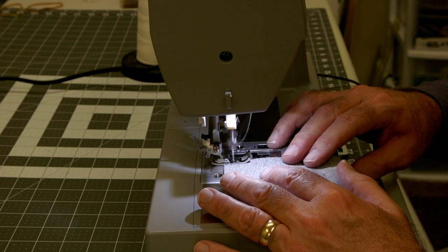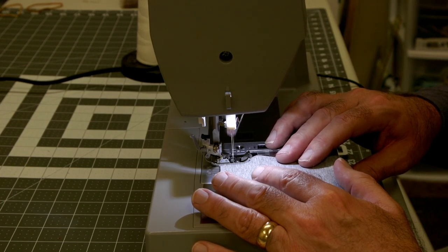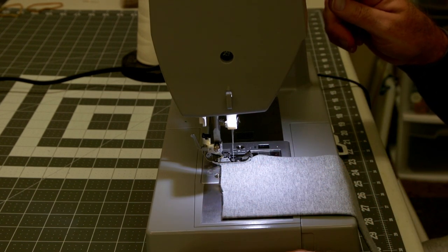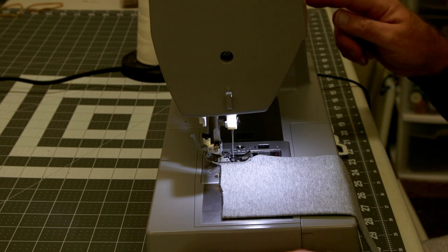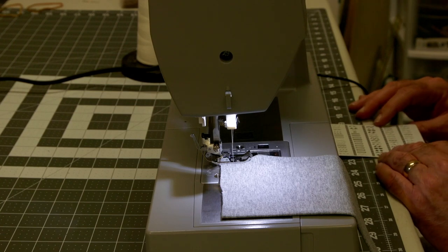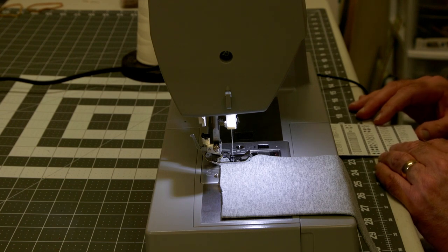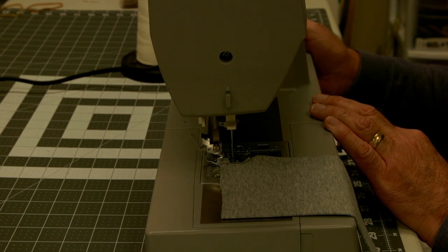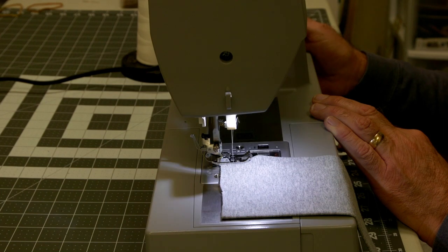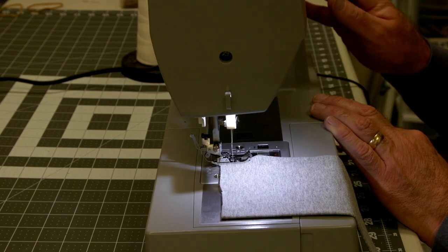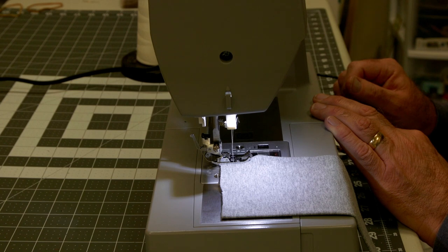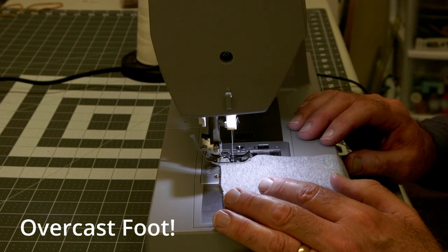Keep that right up next to the guide. Make sure I've got the right stitch. Yeah, that's number four. Let me turn the machine off and reset it. I don't know why it's stopping. Okay, memory four, and it shows using the blind hem foot. Let's try this again and see what happens.